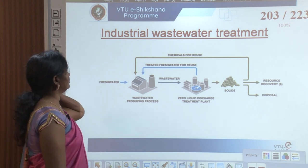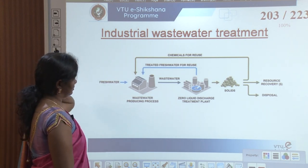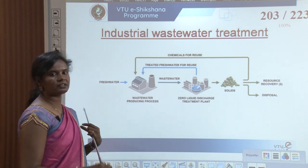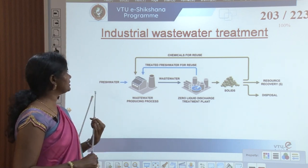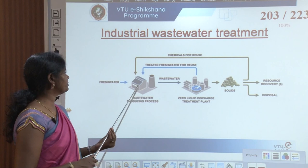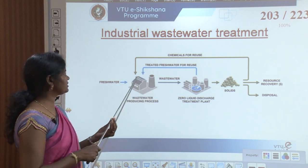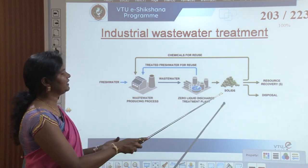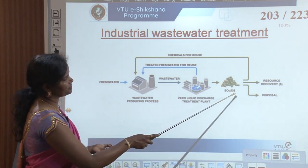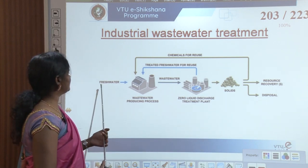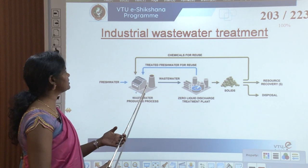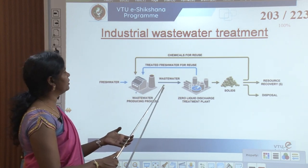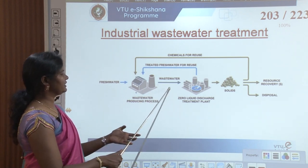Industrial wastewater treatment follows a basic process. Fresh water is released to the wastewater-producing process, which is the industries. A zero liquid discharge treatment plant receives the wastewater. Fresh water is produced for the wastewater-producing process, and from there the waste water goes to the treatment plant.